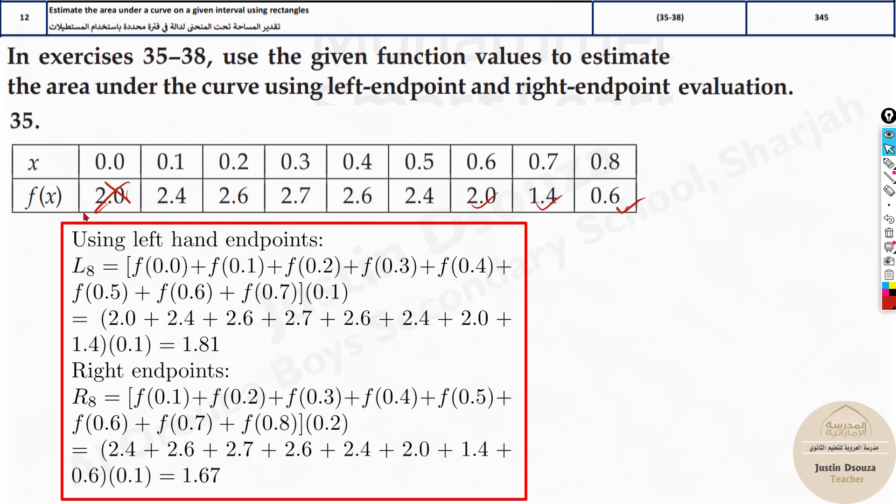All you're doing is adding up all these for the left-hand endpoint method. You're adding from the left side. See f of 0.0, you can directly do it. Add this 2 plus 2.4 plus 2.6 and until 1.4 and then you multiply all of this with the interval that is 0.1. That is the formula.